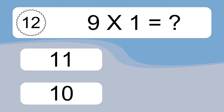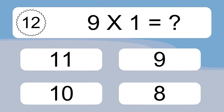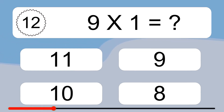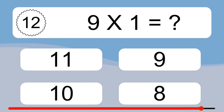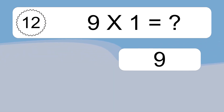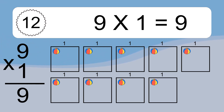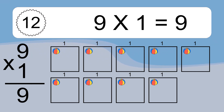9 times 1 equals what? 9 times 1 equals 9. We have 9 boxes and each box has 1 colorful ball inside. If you count all the balls in all the boxes together, you will have 9 times 1 balls. This equals 9 balls.